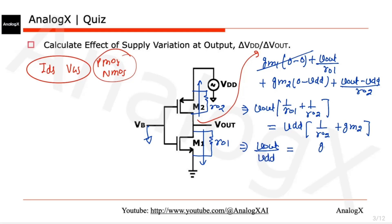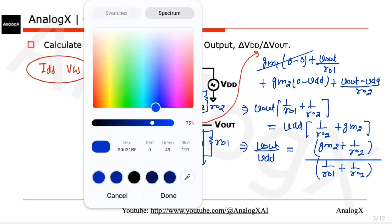VOUT by VDD will be (gm2 plus 1 by ro2) divided by (1 by ro1 plus 1 by ro2). So after simplification we will get...